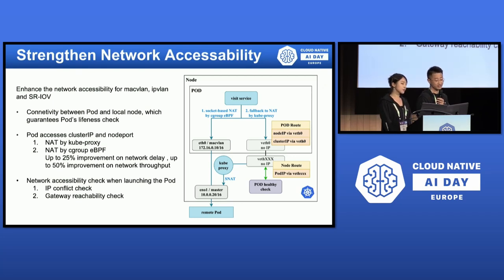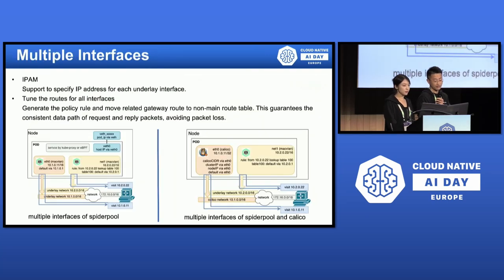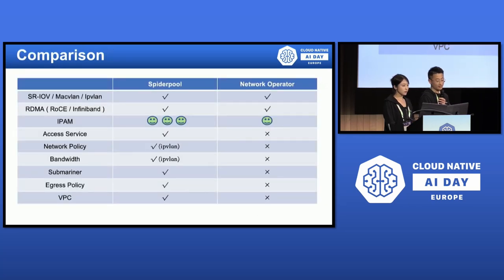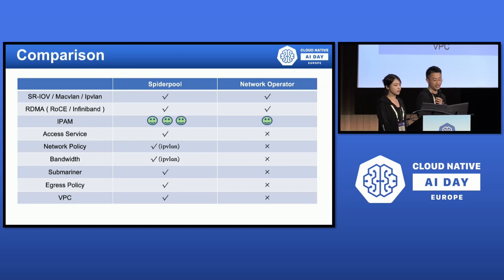Third, when initializing the network namespace of the pod, SpiderPool helps detect IP conflicts and gateway reachability. SpiderPool supports two scenarios of multiple interfaces for pods. In the first scenario, when inserting multiple MacVLAN interfaces into pods, it can specify separate IP pools for each interface, and policy routes are automatically adjusted for all interfaces to guarantee consistent data paths for request and reply packets, avoiding packet loss. In a secondary scenario, when inserting one Calico or Cilium interface and several MacVLAN interfaces into pods, the same adjustment is done automatically. The comparison table shows that SpiderPool makes MacVLAN networking equivalent in capability to solutions like Calico and Cilium.